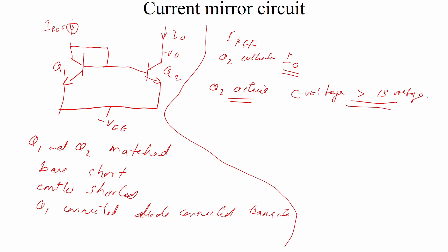In this current mirror circuit, we assume that beta is very high. If beta is very large, the base current is very small and the base current is negligible. The input current I-reference flows through the diode-connected transistor Q1.